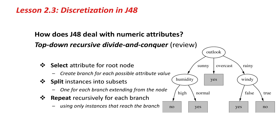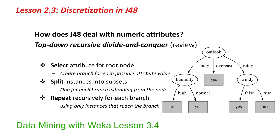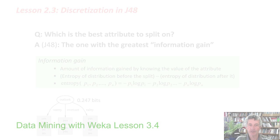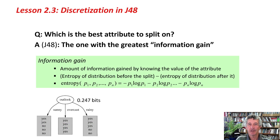Let's review how J48 works. It's a top-down recursive divide-and-conquer algorithm, which we talked about in the last class, Data Mining with Weka. The algorithm involves selecting an attribute to split on at the root node, creating a branch for every possible value of that attribute, splitting the instances into subsets that go down those branches, and repeating recursively for each branch, using only instances that reach the branch.